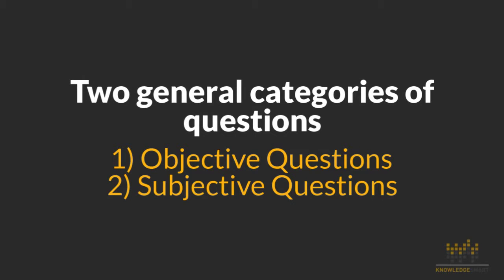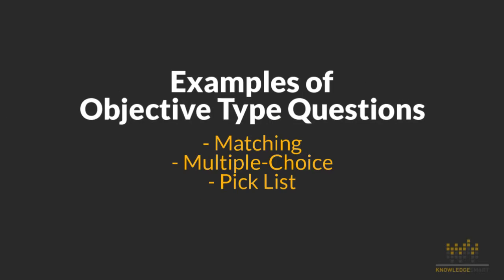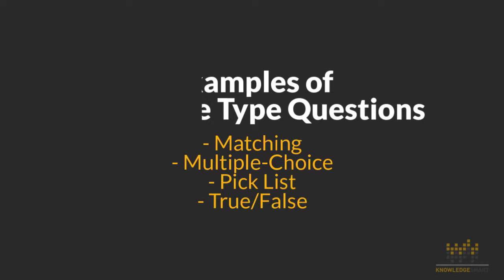Let's look at the two general categories of questions: objective questions and subjective questions. Here are a few examples of objective type questions: matching, multiple choice, pick list, or true or false.